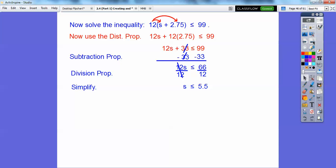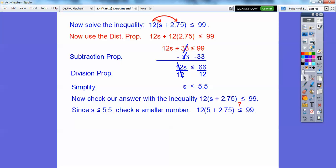Now remember, S was the cost of the shirt, so we can have a fraction. In fact, it's $5.50 or less than. So let's check our answer with the inequality right here. Since it's less than or equal to 5.5, let's just try a smaller number like 5. So plug in 5 right here, and now let's just check it out. 5 plus 2.75 is 7.75.